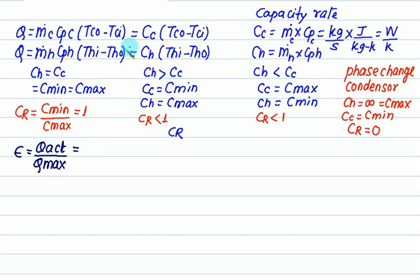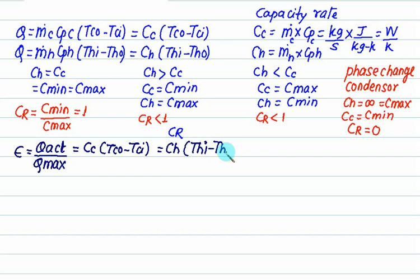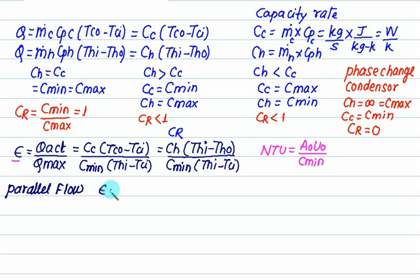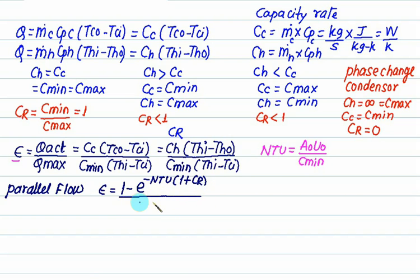Effectiveness is defined as actual heat transfer divided by maximum heat transfer. Actual heat transfer is given by Cc times (Tco minus Tci) or Ch times (Thi minus Tho). For maximum heat transfer, we select Cmin, so the denominator is Cmin multiplied by (Thi minus Tci). For parallel flow, effectiveness is given by: [1 minus e to the power of minus NTU times (1 plus CR)] divided by (1 plus CR).